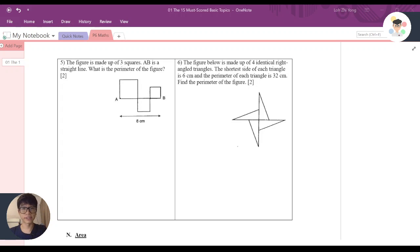This question says that the figure below is made of four identical right angle triangles, so you can see four of them are the same. The shortest side of each triangle is 6cm. Basically if you look at the triangle, they're all the same, this is a right angle triangle, and the shortest side is 6cm. It's given that the perimeter of each triangle is 32cm. Find the perimeter of the figure.